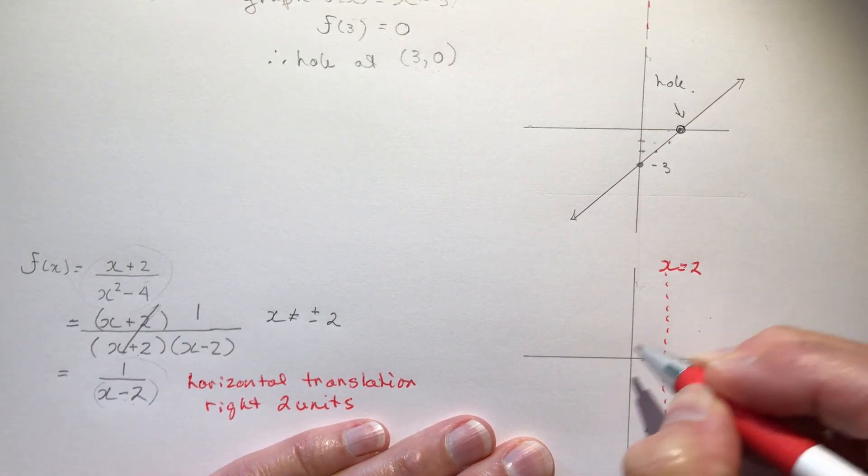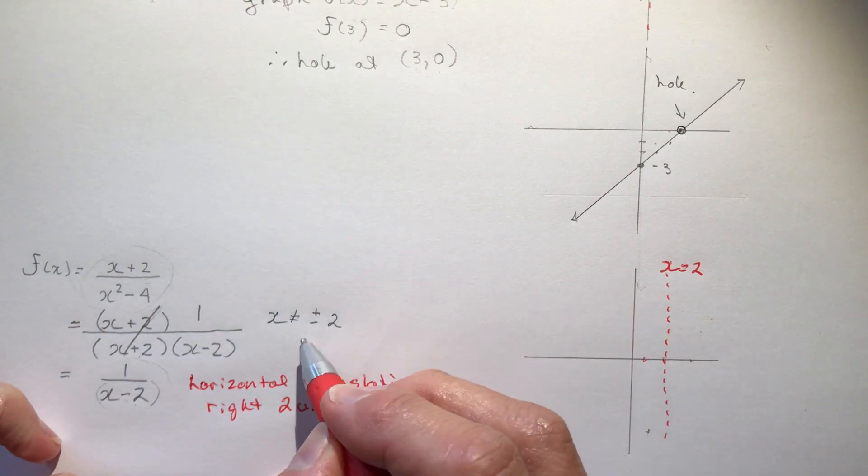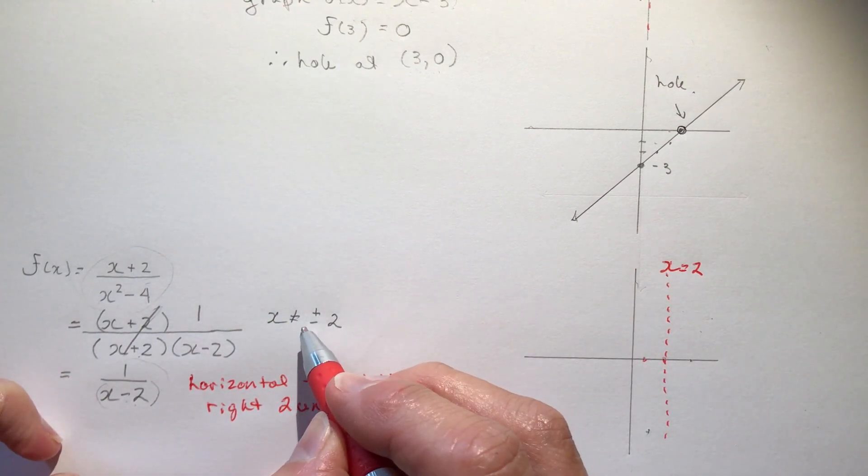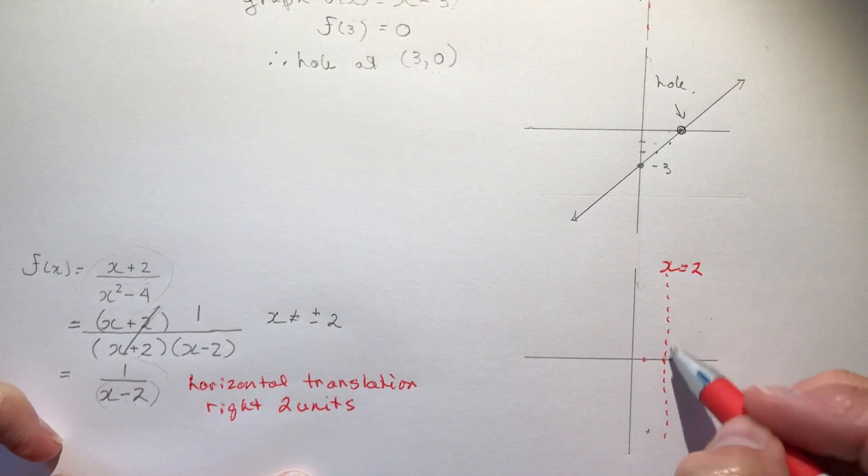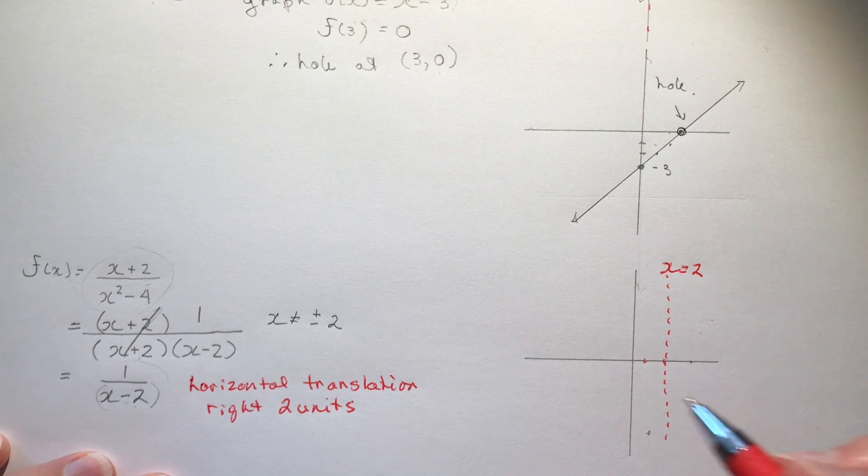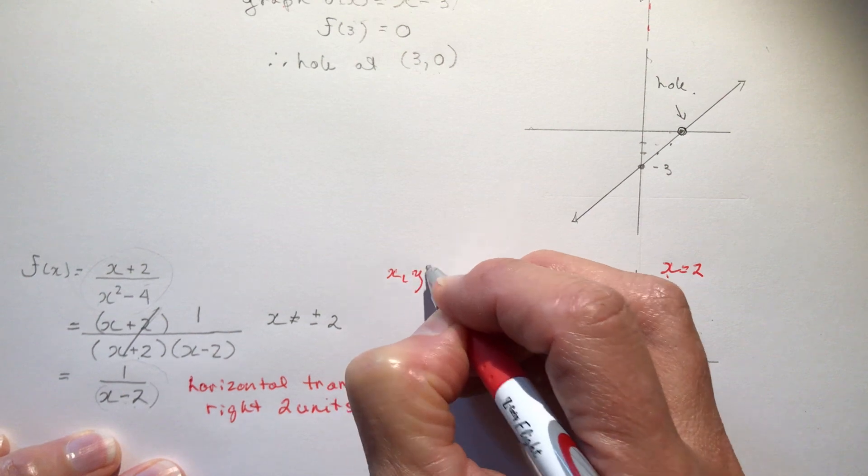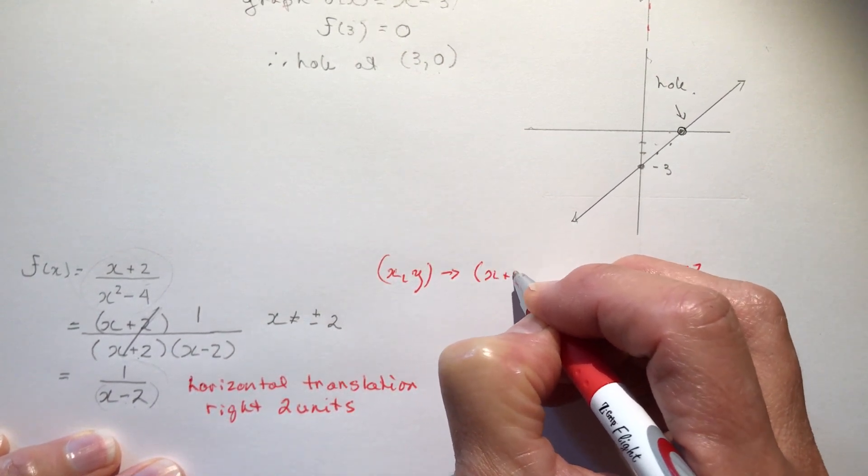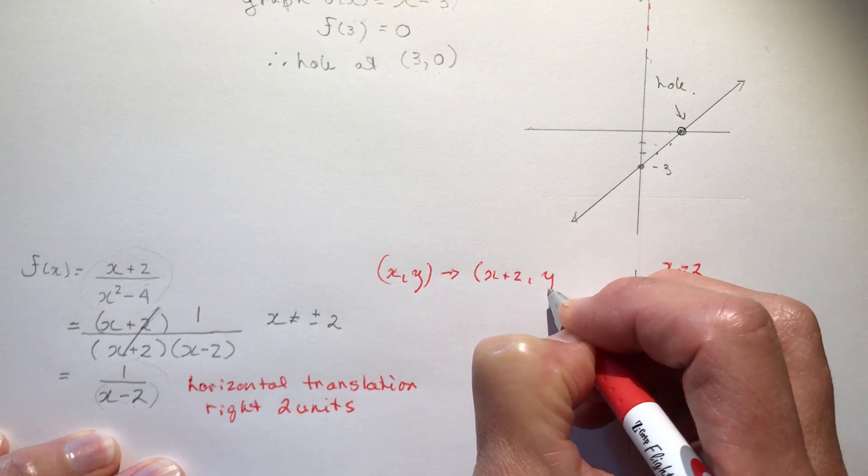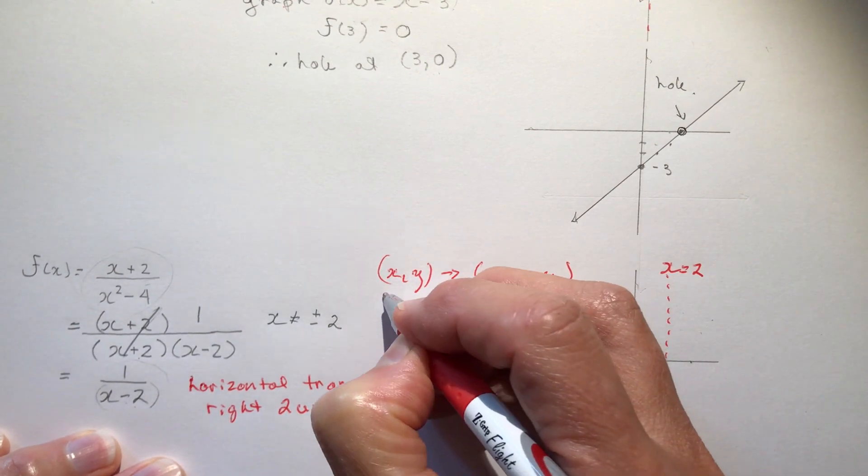So when I move to the right two units that means that my asymptote is going to go over two units as well. So my vertical asymptote is now here at x equals 2. I've moved it to the right. So you see here this restriction x cannot be equal to positive 2 just means this is where the asymptote is. So if I asked you for a mapping rule for this you'd say well x and y's, x I'm going to add 2 to my x's and I'm going to leave the y alone.